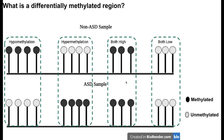A hypermethylated region is basically showing the opposite, showing methylation in the ASD sample compared to the non-ASD sample. Both of these samples are showing high and low levels in the third and the fourth site. For the sake of differentially methylated regions, what's very important is the regions that are hypomethylated or the regions that are hypermethylated — that is what we'll be looking at in differentially methylated regions.